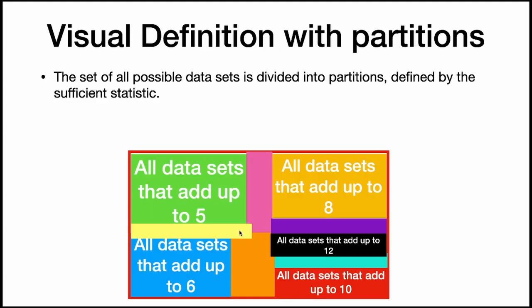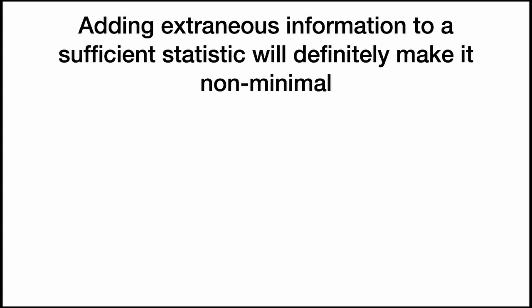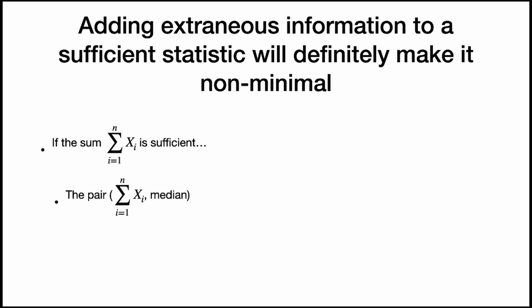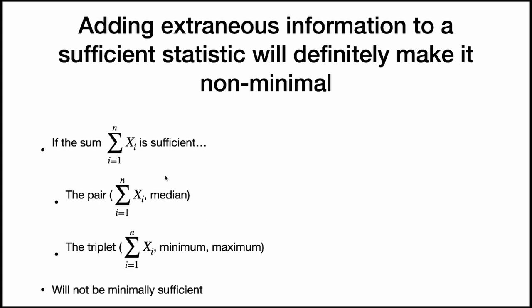We want to partition our data set into groups defined by their sum: data sets that add up to 6, data sets that add up to 5, data sets that add up to 8. For the purposes of learning about lambda, all data sets within the same group will be the same because they're equivalent in terms of the sufficient statistic. Now adding any extraneous information to a sufficient statistic will make it non-minimal because it breaks up these partitions. If the sum is sufficient, then a pair of statistics that adds extra info — like the sum plus the median, or the triplet of sum, minimum, and maximum — will not be minimally sufficient statistics, even if they are sufficient.